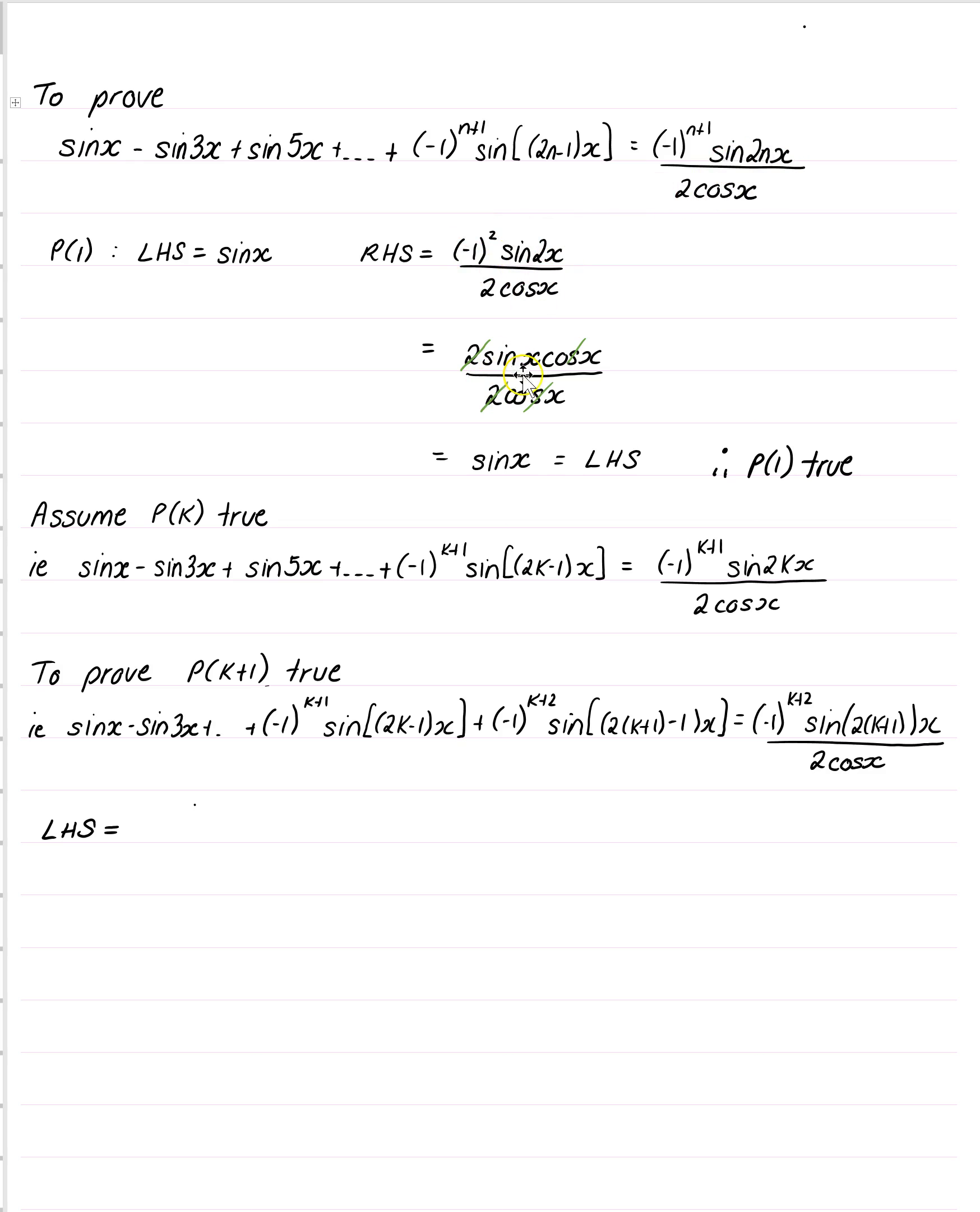Sine 2x we replace with 2 sine cos, and downstairs we've got our 2 cos x, so the 2's cancel, the cosines cancel. Lo and behold, that equals our left-hand side, so therefore P of 1 is true.